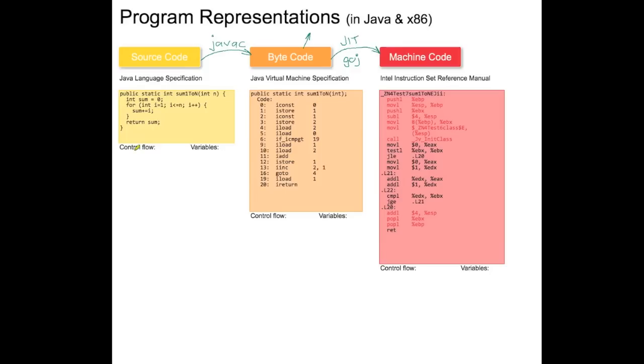So control flow would be behavior, variables would be state. So I want to point out first the different control flow constructs we have in all those three levels of our program or those three representations.